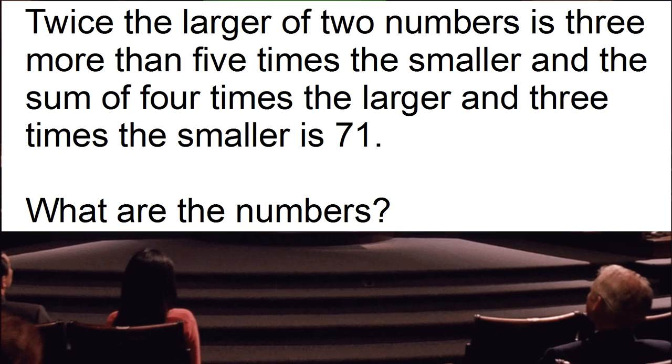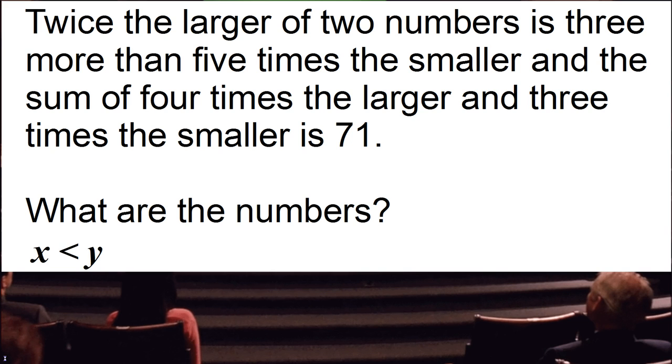We have a word problem that relates two different variables x and y. So let's imagine we have x which is smaller than the number y. Twice the larger of two numbers, two times y, is equal to three more than five times the smaller number x. So that's one equation.